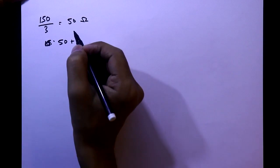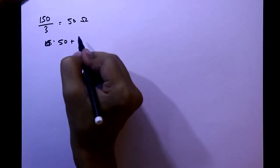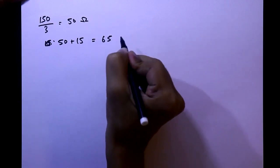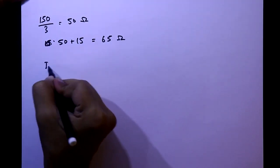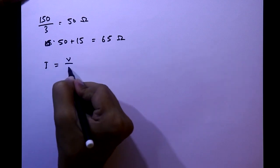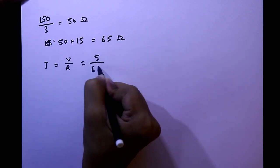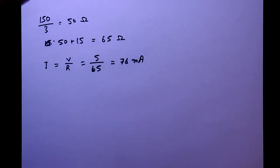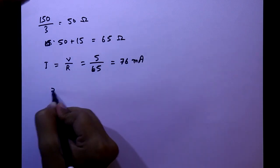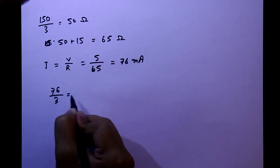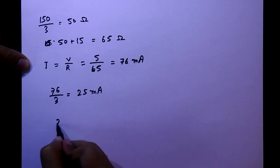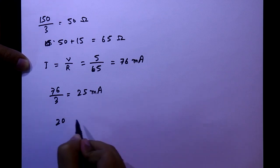With 3 LEDs left, total resistance = 50 ohms (equivalent LED) + 15 ohms (external) = 65 ohms. Current = V/R = 5/65 ≈ 76 milliamperes for three LEDs, which is 76/3 ≈ 25 milliamperes per LED.